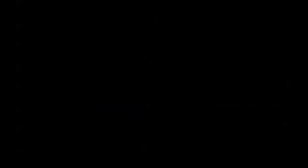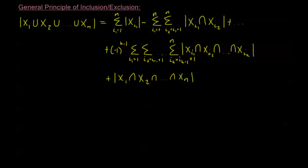There's a clear pattern here. The generalized Principle of Inclusion and Exclusion for n different sets says: add together the order of each individual set, then subtract the order of all possible intersections of two sets, and continue — alternating adding and subtracting at each level of intersection.